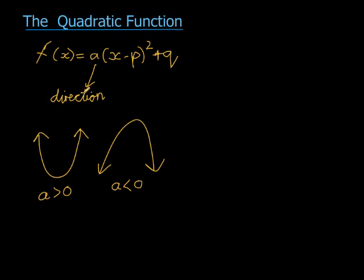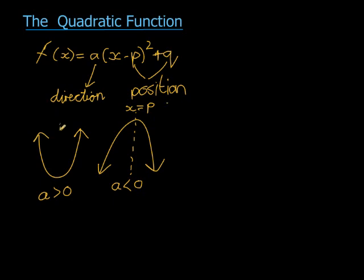Now 'a' determines the direction, and p and q determine the position. p is the symmetry line — in other words, x equals p is the value around which the graph will have symmetry; you can fold it in half on that line and the parts will fold on top of each other. x equals p is the symmetry line, and q is the maximum or the minimum value — the maximum output or the minimum output.